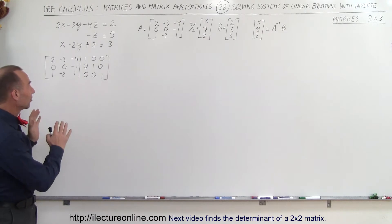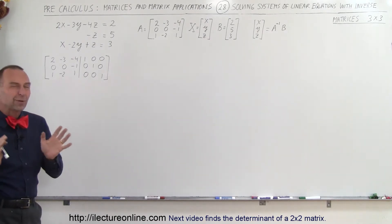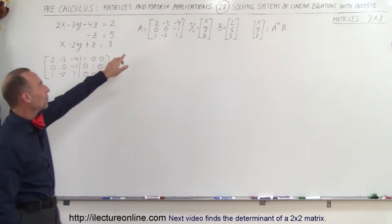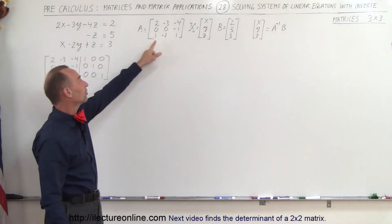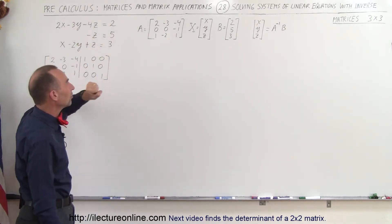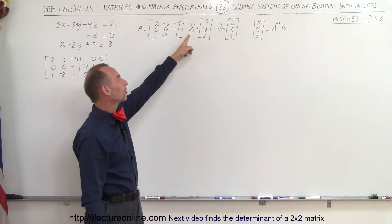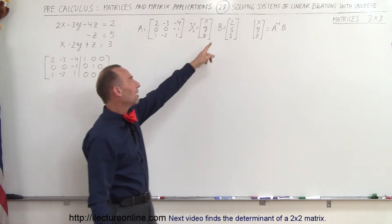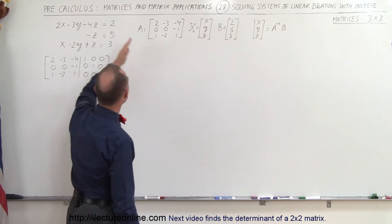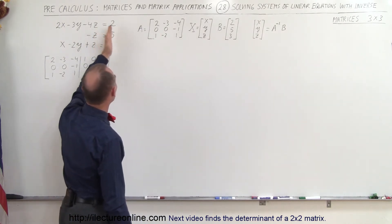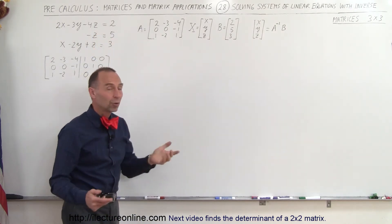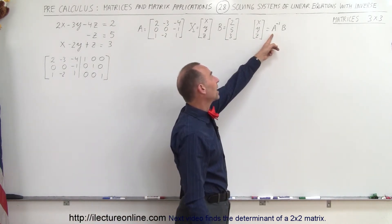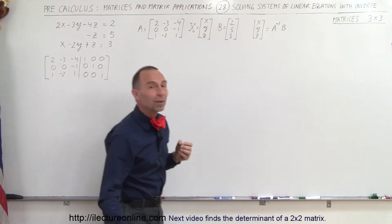We have a fairly straightforward example to show how this actually works. The concept is that we have a matrix A which has all the coefficients of x, y, and z from the three equations. We have matrix X which represents the three variables x, y, and z. And we have matrix B which represents the constants on the right side of the equal sign. x, y, and z can be found by taking the inverse of matrix A and multiplying it by matrix B.